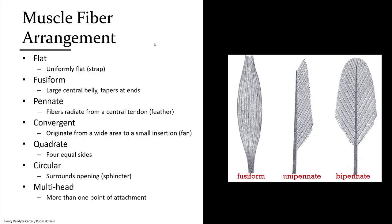Muscles have fiber segments that are arranged in various ways, which affect how force is developed. Most people are familiar with the fusiform muscle that bulges in the middle. Pennate muscles have fibers that radiate off a tendon in a manner similar to a feather. Convergent is like a fan, where it has a wide base of origin and narrows down to a single attachment. Quadrate is flat with four equal sides.